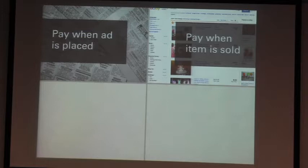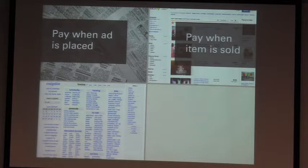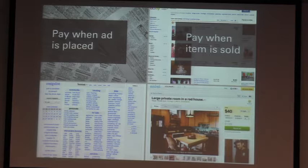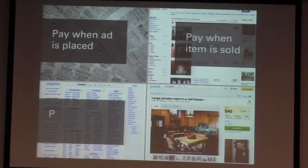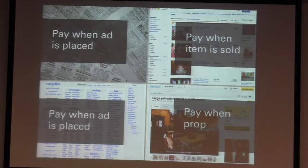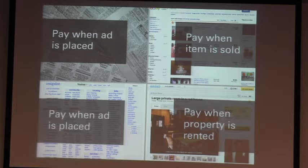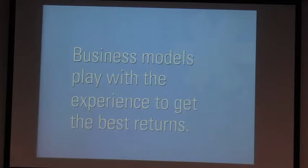A newspaper's classifieds work differently than an eBay listing. They get paid when the ad is placed in the newspaper, but eBay gets paid when the item is sold. It's a subtle difference, but it changes the dynamic of the design. Similarly, Craigslist gets paid when the ad is placed, whereas Airbnb gets paid when the property is rented. Again, a subtle distinction — different in the design, different in the business model. Business models allow us to play with the experience to get the best returns, and interestingly, they can also let us play with the returns to figure out how to get the best experience.